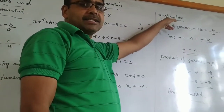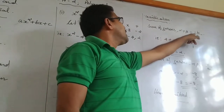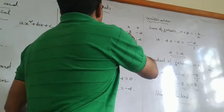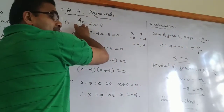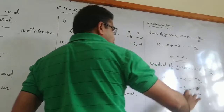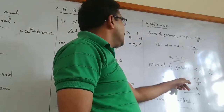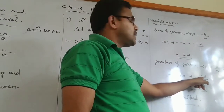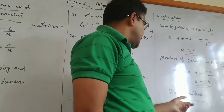Now we go to verification. Sum of zeros: alpha + beta = −b/a. The two zeros are 4 and −2, so 4 + (−2) = 2. Value of b is −2, value of a is 1, so −b/a = −(−2)/1 = 2. Hence 2 = 2, verified. Product of zeros: alpha × beta = c/a. That is 4 × (−2) = −8. Value of c is −8, value of a is 1, so c/a = −8/1 = −8. Hence −8 = −8, verified.